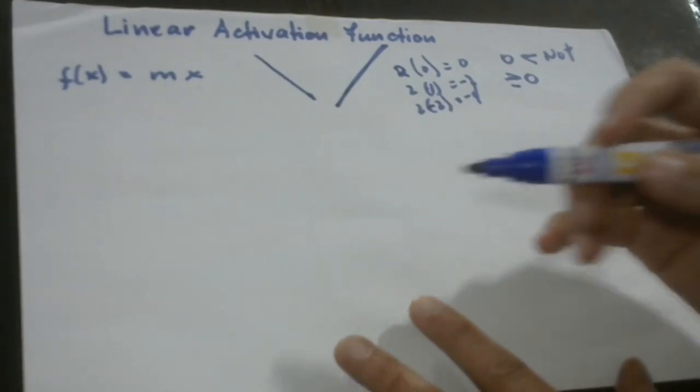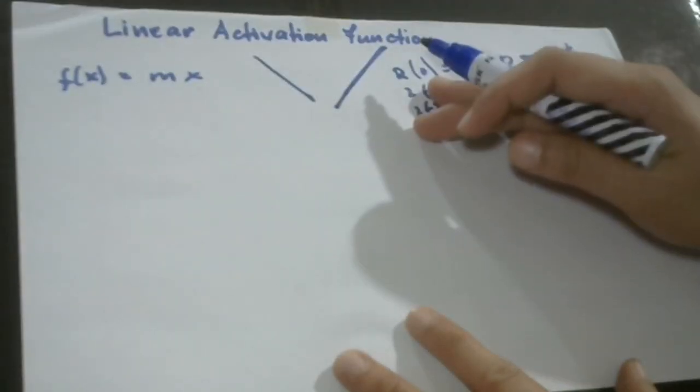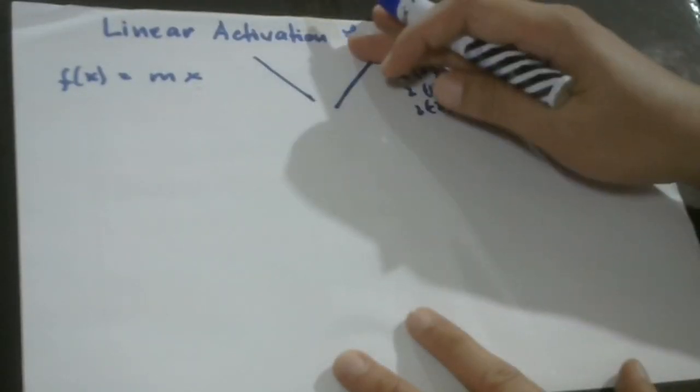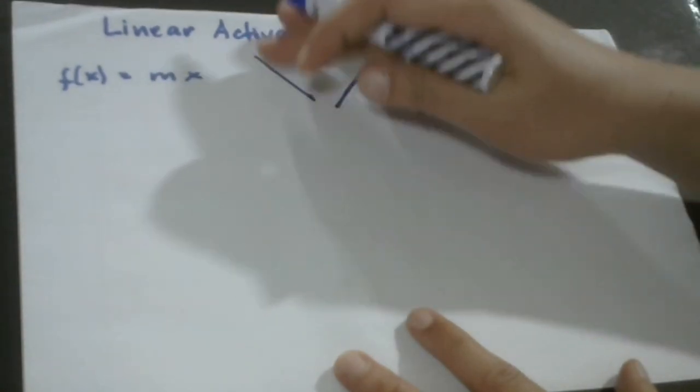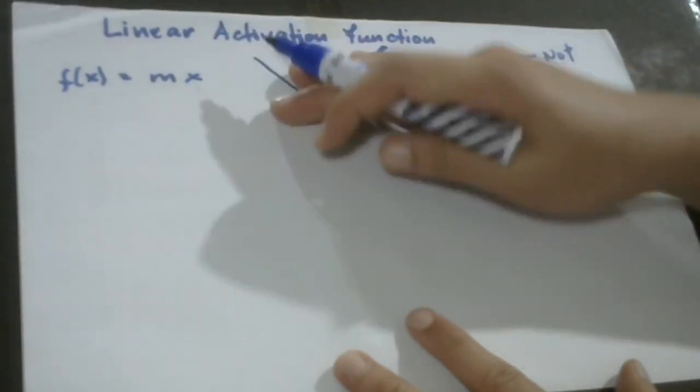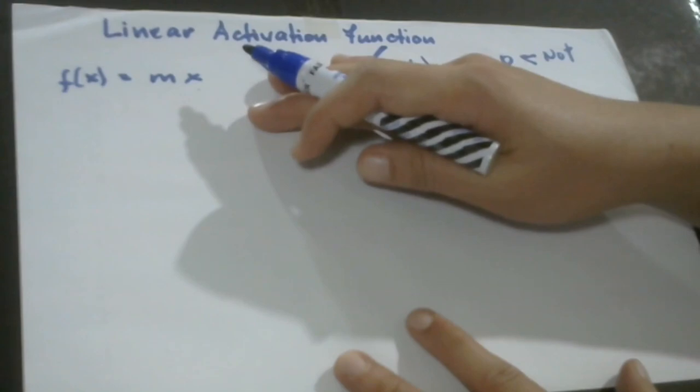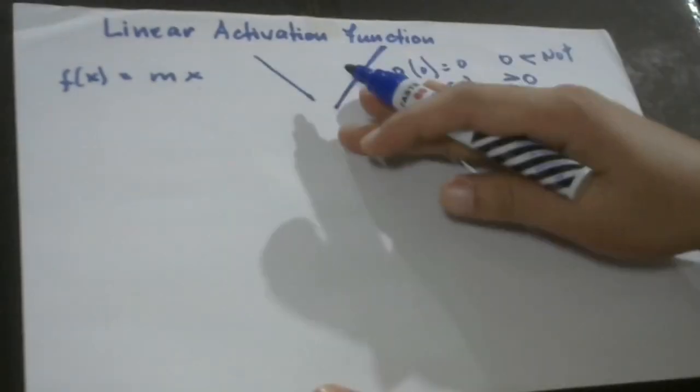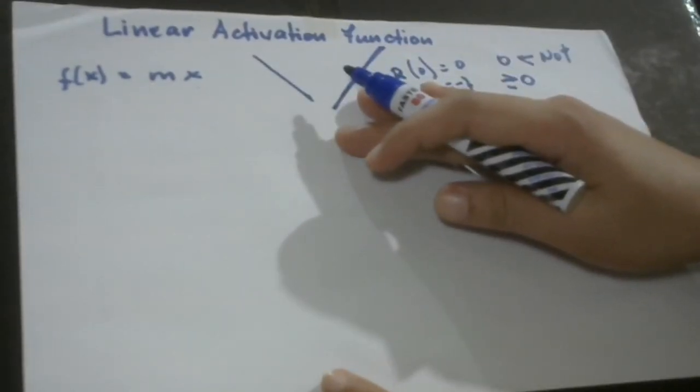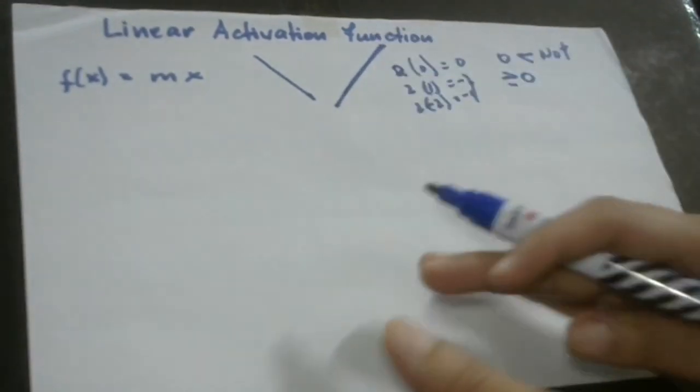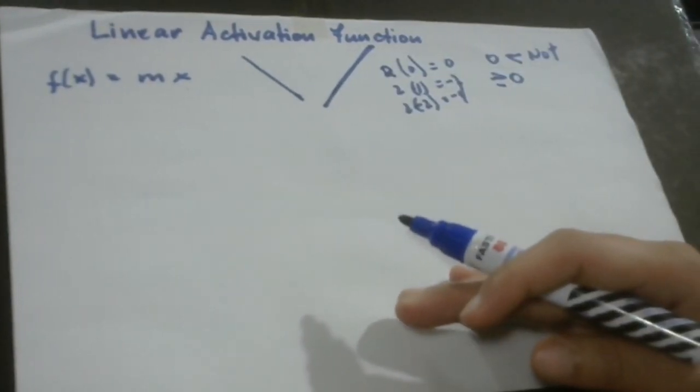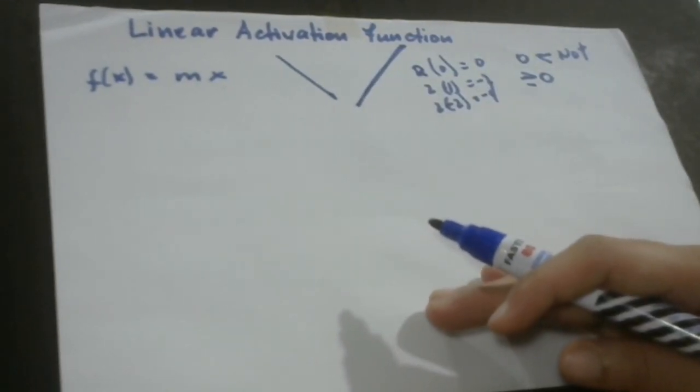So mathematically, how do we express linear activation function? This can be expressed in this mathematical formula: we have a function of x equal to m times x. This kind of function has its own drawbacks or major problems, and we're going to discuss two of the major problems of linear activation function.